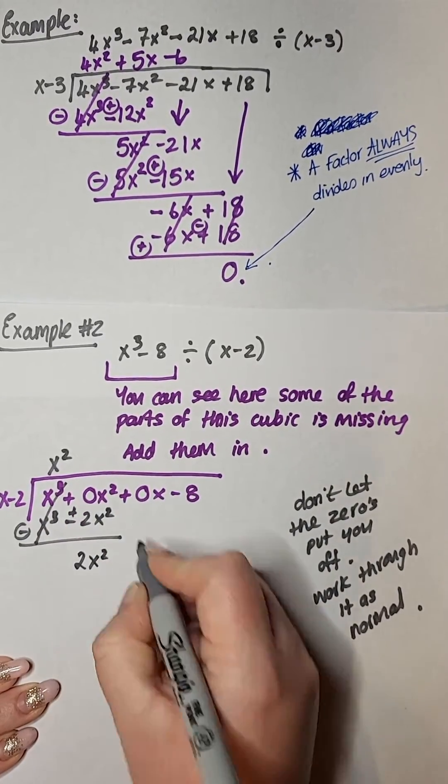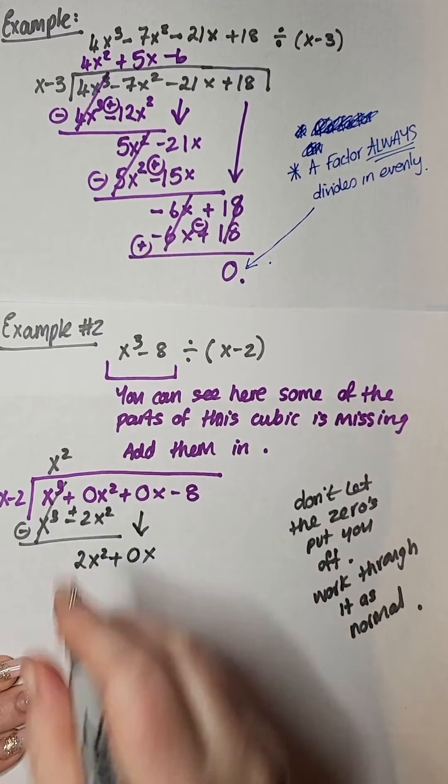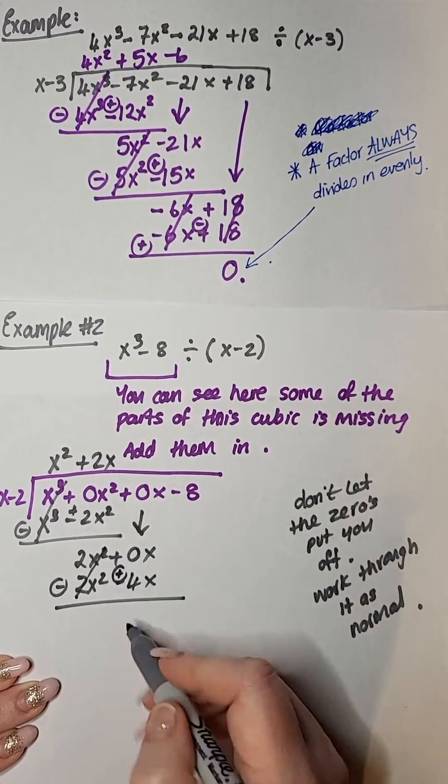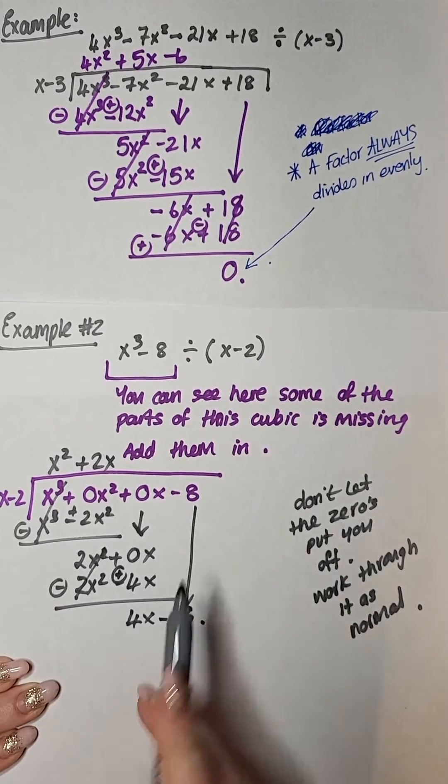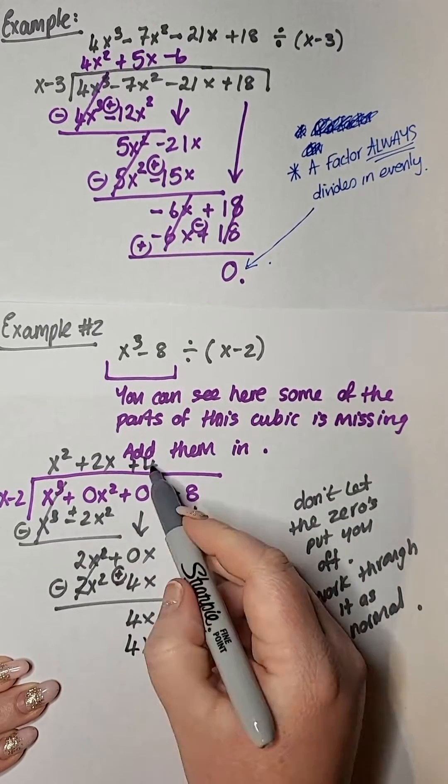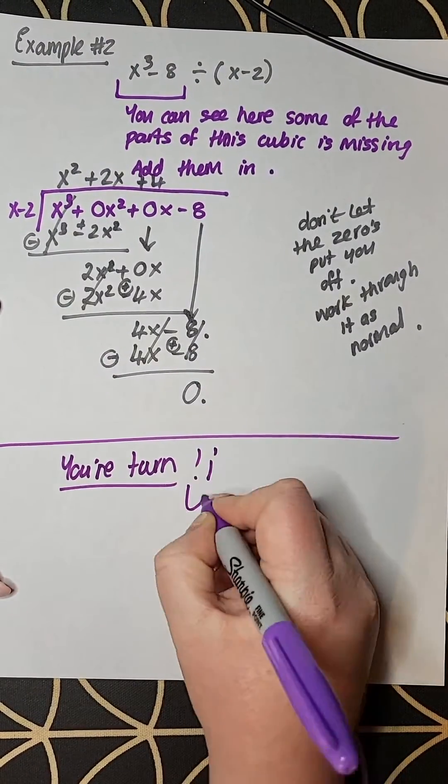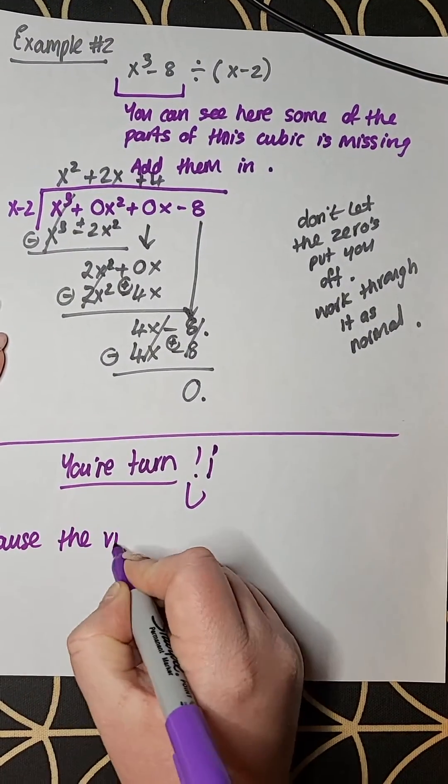So as you can see, I'm working through this one here and I see an x cubed minus 8. I'm missing the x squared bit and the x part. So I write them in as 0x squared plus 0x. Sometimes this can cause a bit of confusion and a bit of an error, but make sure that you just work it through as normal.